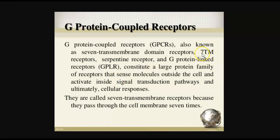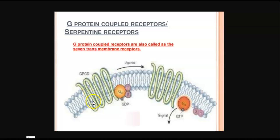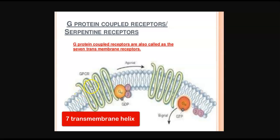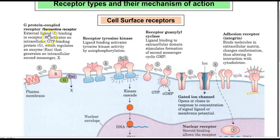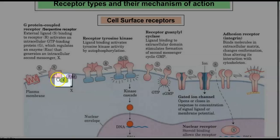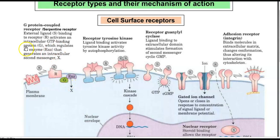It is referred to as a 7-transmembrane receptor because, looking at this receptor, it has 7 transmembrane helices — 1, 2, 3, 4, 5, 6, 7. The external ligand or signal molecule binds to the receptor, activating an intracellular GTP-binding protein, which regulates various enzymes that in turn generate intracellular second messengers to trigger the genetic response.